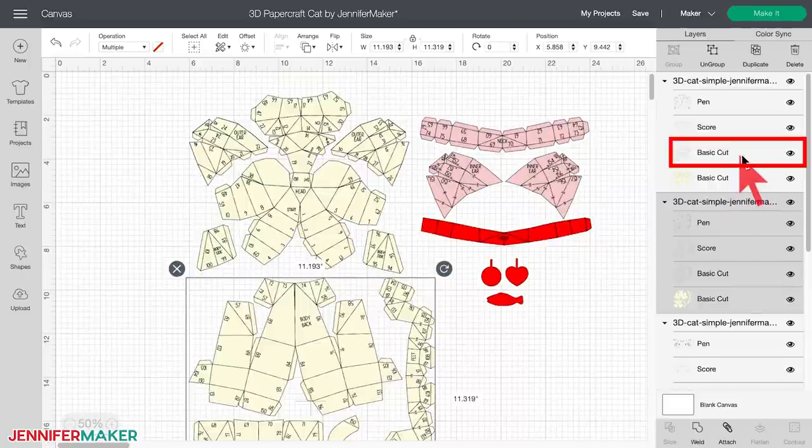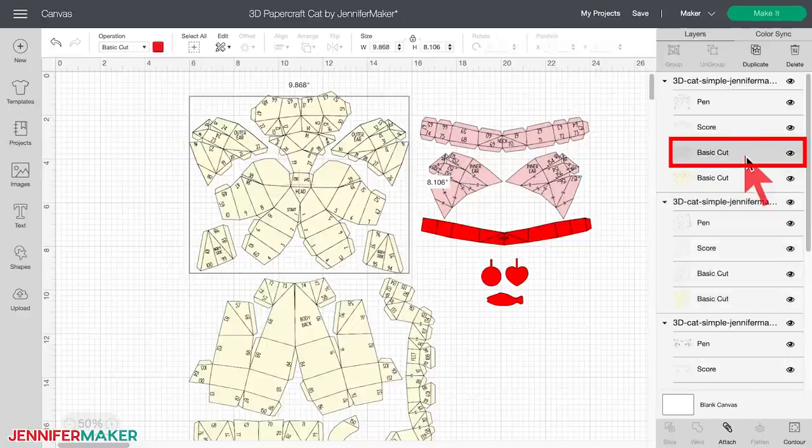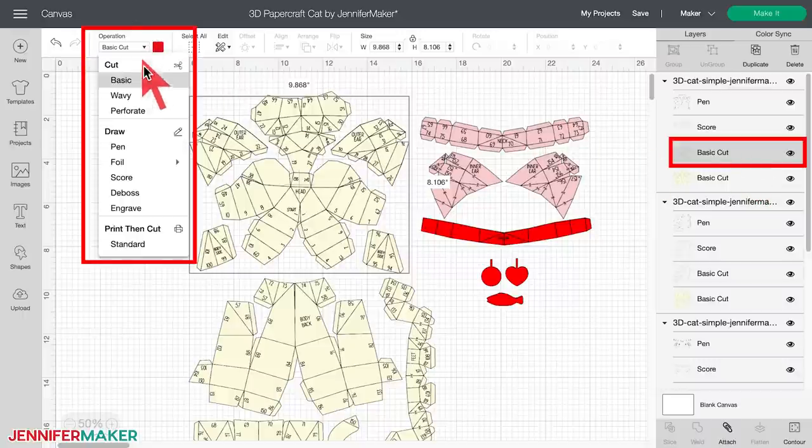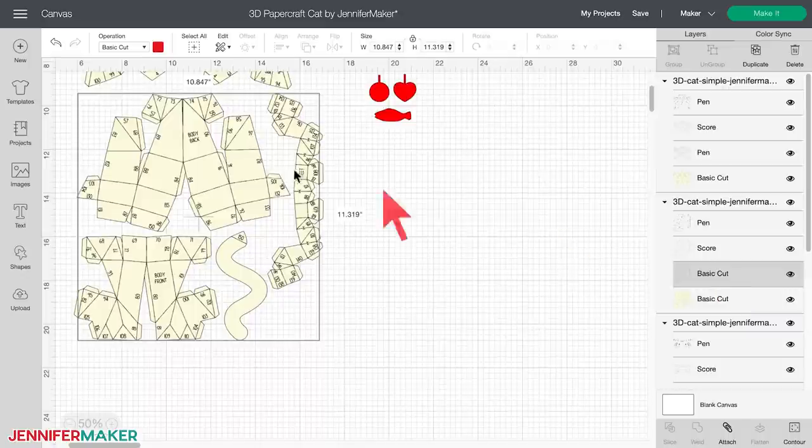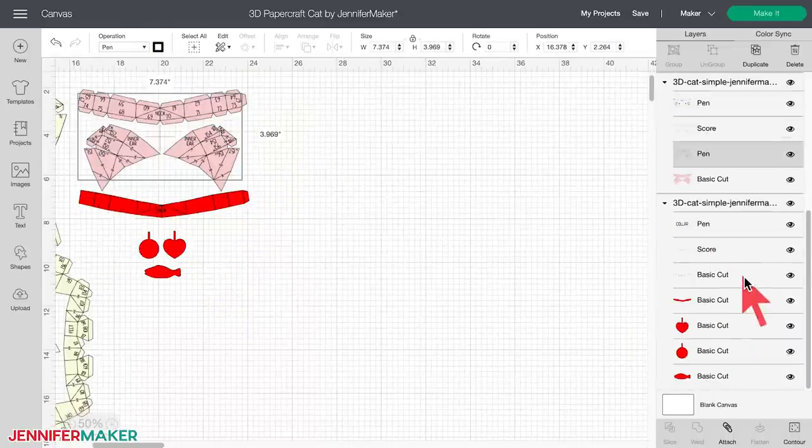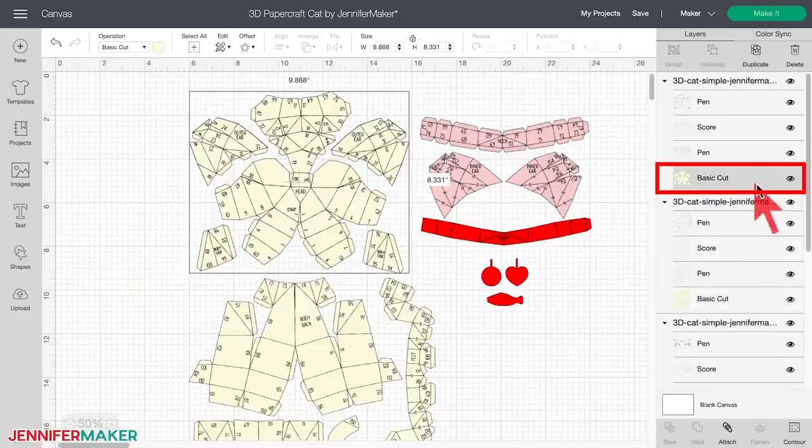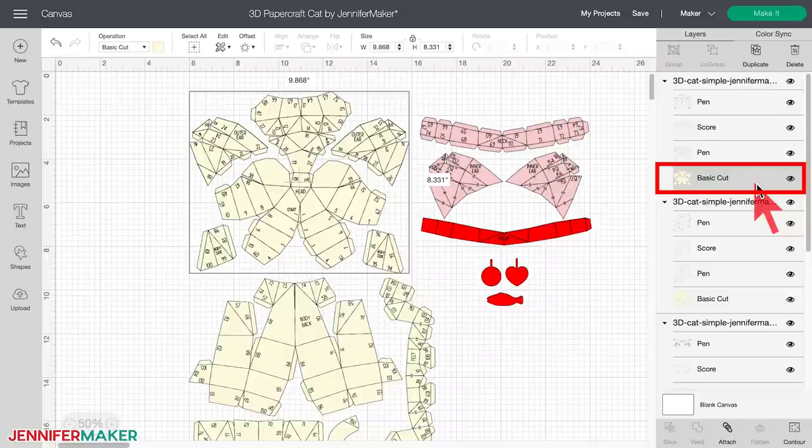Now you get to decide what to do with the third layer. I'm going to change mine to pen so I can see my score lines better. But you could also choose score if you wanted. Just change all of these third layers in your group to either pen or score. Do not leave them as basic cut. That's very important. You can, of course, delete or hide those layers as well. And the fourth layer can stay as it is. It is set to basic cut already. And that's exactly what we want it to do.